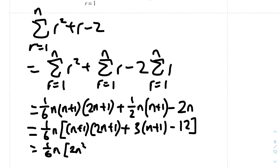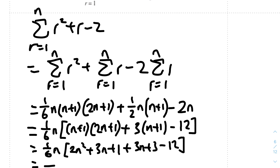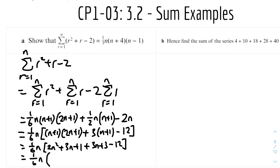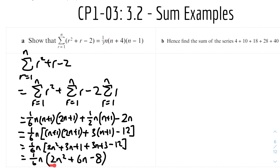Expanding the bracket: (n+1)(2n+1) gives 2n² + 3n + 1. Adding 3(n+1) gives 3n + 3. Minus 12. Combining: 2n² + 6n + 4 − 12 = 2n² + 6n − 8. So we have one-sixth n times (2n² + 6n − 8). We can notice we can factorize a 2 from each term inside.